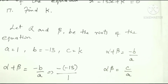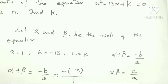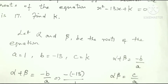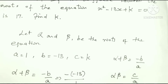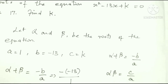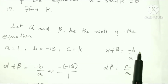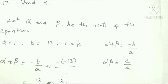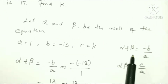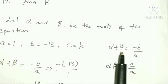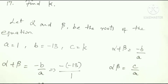Let alpha and beta be the roots of the equation. We use the nature of roots formulas: alpha plus beta is the sum of the roots, and alpha into beta is the product of the roots. The sum of roots formula is minus b by a, and the product of roots is c by a.